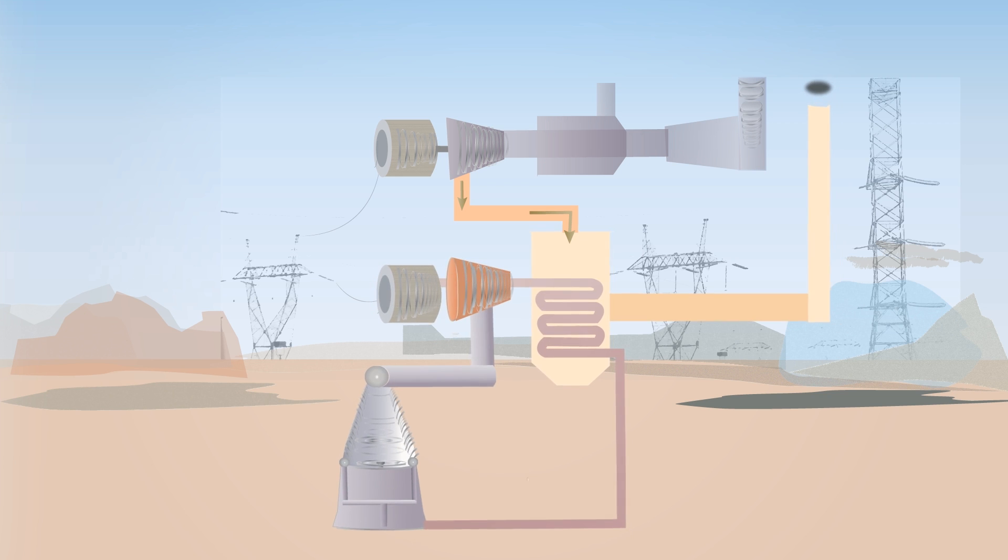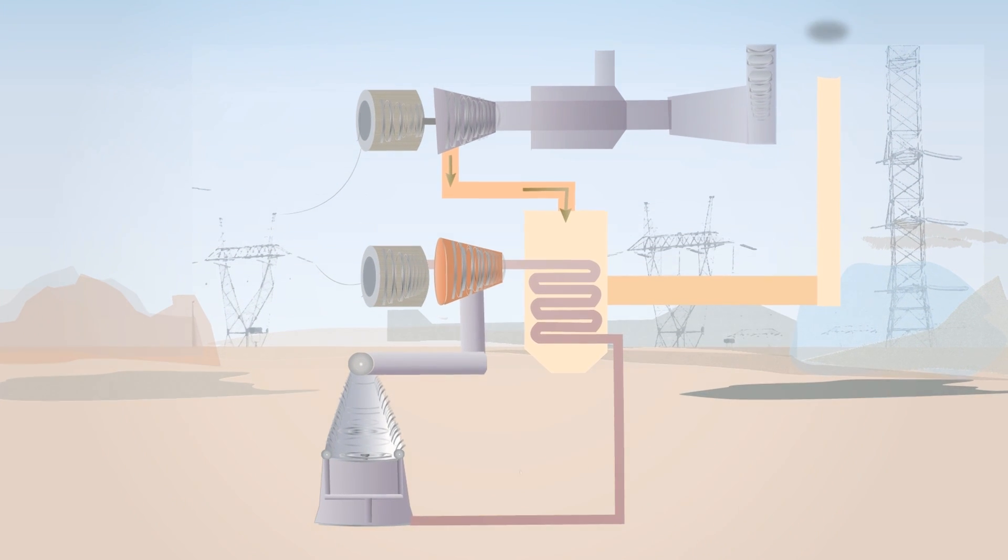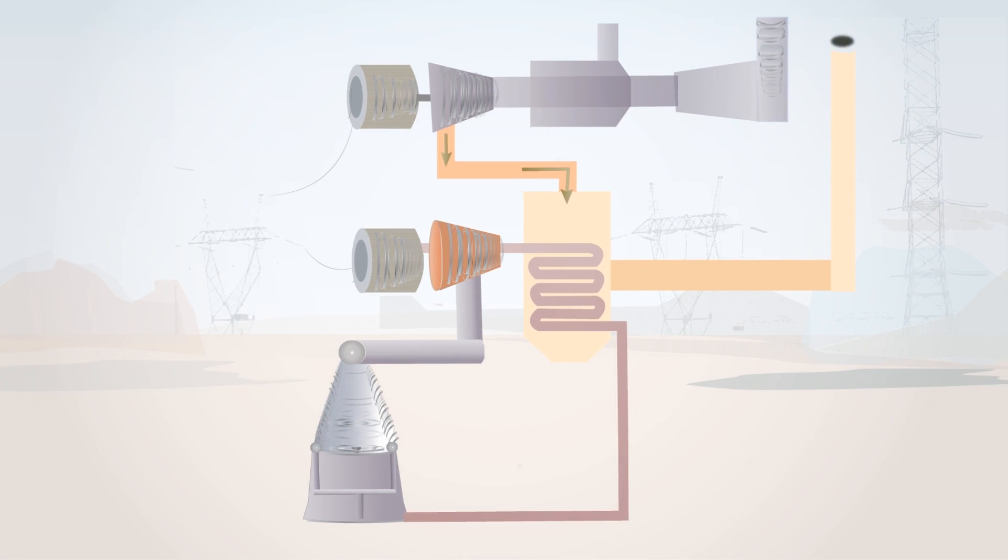A dry cooling system at a natural gas combined cycle plant uses no cooling water. Many new power plants that are being built or proposed are natural gas combined cycle plants with dry cooling systems.